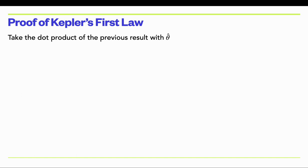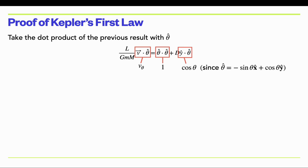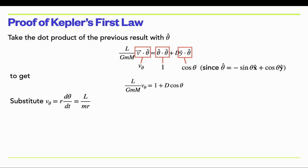We take the dot product of the result with θ̂. The dot product v · θ̂ is just v_θ. θ̂ · θ̂ is just one. And ŷ · θ̂ is just cos θ, because θ̂ = −sin θ x̂ + cos θ ŷ, so pulling out the cos θ term gives that dot product. This simplifies the expression.